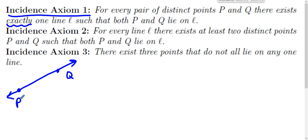Ground rule two says for every line l there exists at least two distinct points P and Q such that both P and Q lie on l. Now that's a different thing than rule one. Rule two starts with a line, and it says there could be eleventy billion points on this line, I don't know.